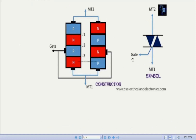TRIAC stands for Triode for Alternating Current. It has three terminals: gate, MT2, and MT1. Unlike SCR, TRIAC can trigger in both directions. This device can be used in AC systems as a switch.